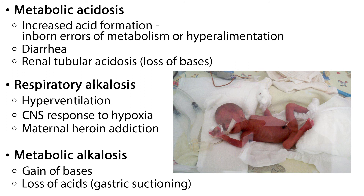Metabolic acidosis may also occur due to increased acid formation from inborn errors of metabolism or hyperalimentation. It is also seen with glycosuria and renal tubular acidosis from a loss of bases. Respiratory alkalosis can occur with hyperventilation or the CNS response to hypoxia or maternal heroin addiction. Metabolic alkalosis occurs with a gain of bases or loss of acids, which can occur with gastric suctioning.